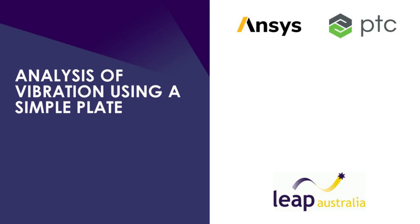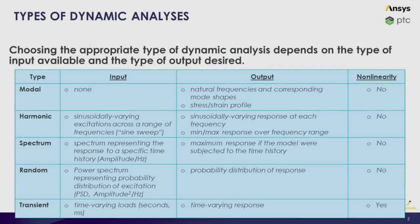In this video we will be discussing the dynamics of a simple plate. The plate has dimensions of 2000 by 200 by 10 mm and is made from steel. We will be using five different methods of analysis to determine the dynamic properties of the plate. The inputs and outputs for each method are listed here and we will go into more detail for each method later.